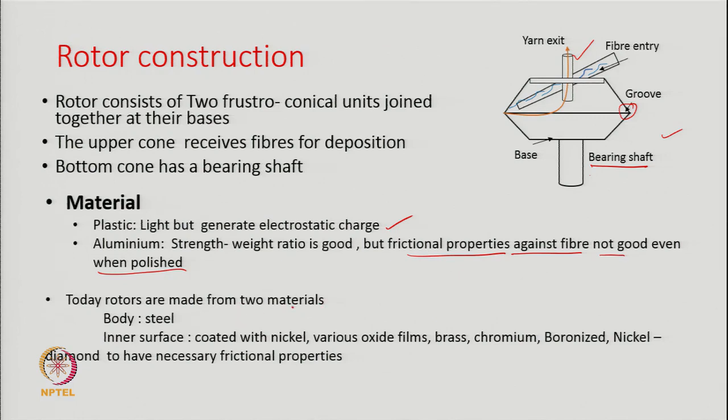Therefore, rotors today are made with a steel body, and the inner surface is coated with materials such as nickel, various oxide films, brass, chromium, bronzed nickel, or diamond. These coatings are needed to impart the right frictional properties. Additionally, since fibers are very abrasive, the inner wall's frictional characteristics change with time due to continuous abrasion, so the coating must protect the rotor while providing the right finish. Everyone expects the rotor to have a certain service life.